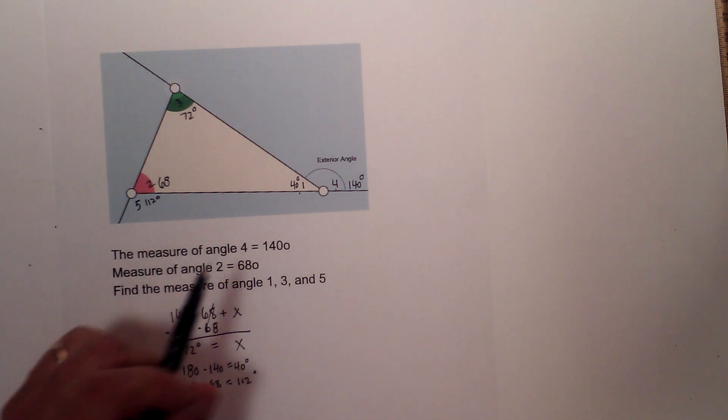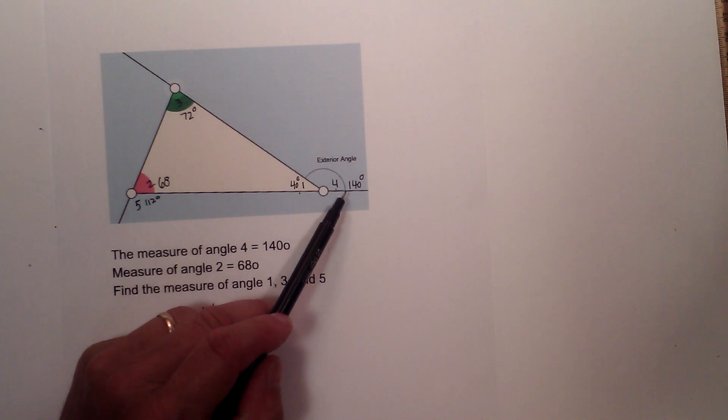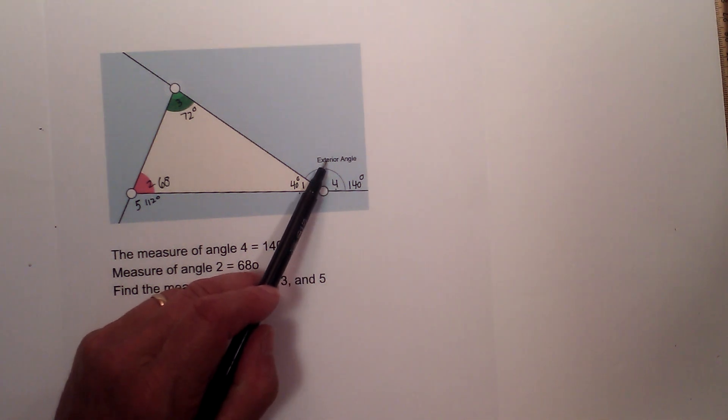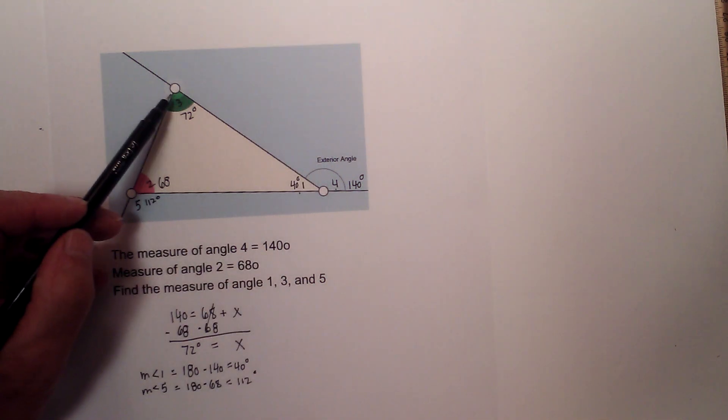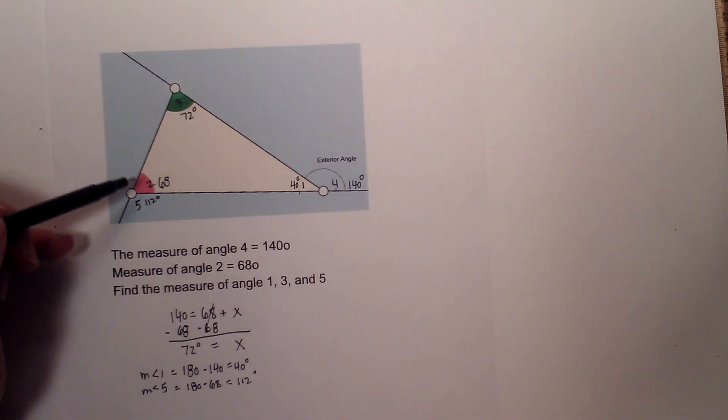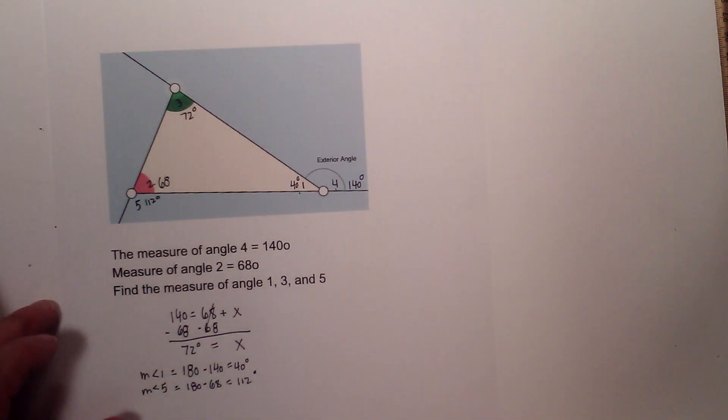That just shows you how you can use the relationship that the exterior angle is equal to the measure of the two remote interior angles, and you can find a lot of the other angle measures in the triangle. Thanks for watching, and Moomoo Math uploads a new math and science video every day. Please subscribe and share.